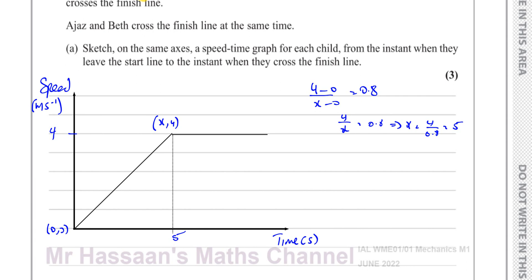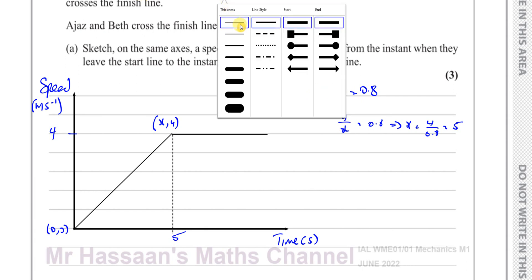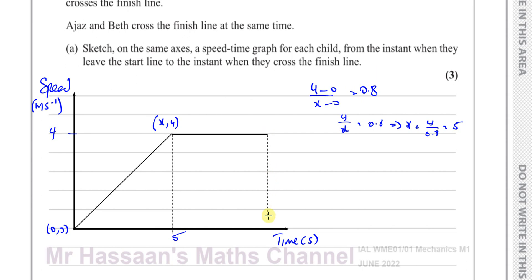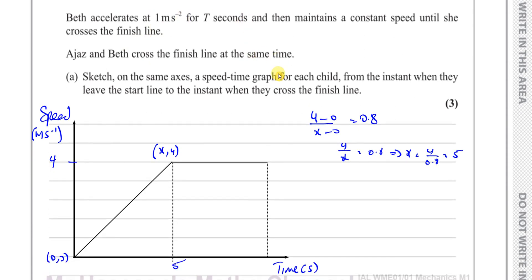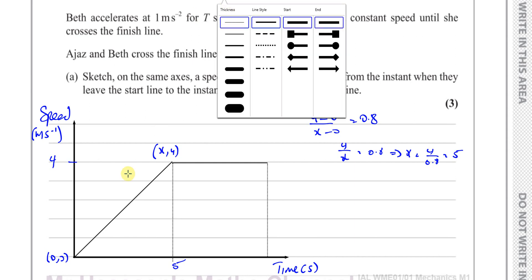It takes Ajaz a certain time to finish the race which we don't yet know — let's call that TF. Now, Beth accelerates at 1 m/s², so her line on the graph will be steeper than Ajaz's.